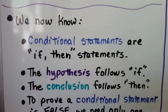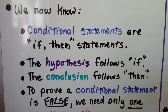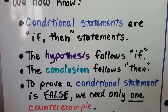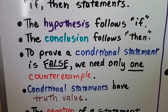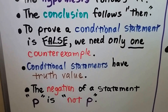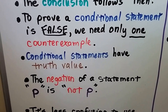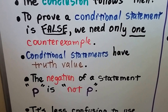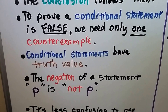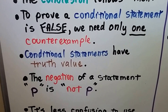We now know, because of that previous video 2.2a, that conditional statements are if-then statements. The hypothesis follows 'if,' and the conclusion follows 'then.' To prove a conditional statement is false, we need only one counterexample — just one.